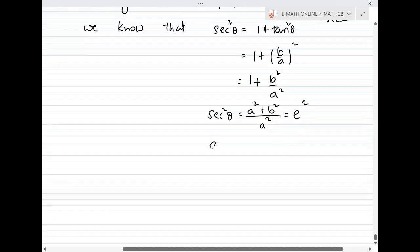Since secant square θ equals e square, we get secant θ equals e. Therefore θ equals secant inverse e.